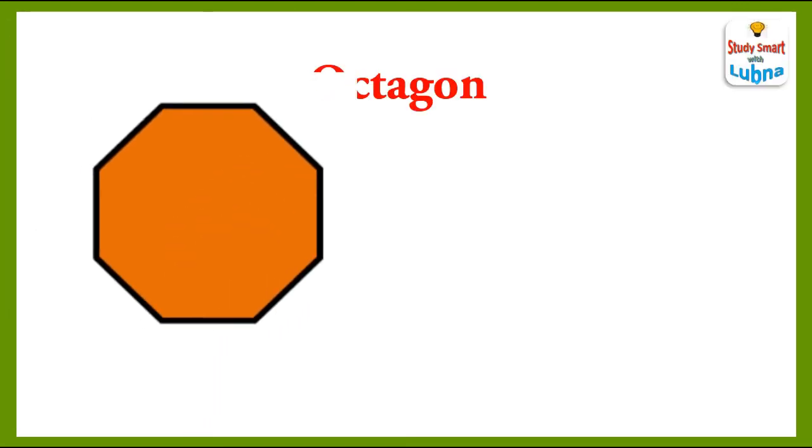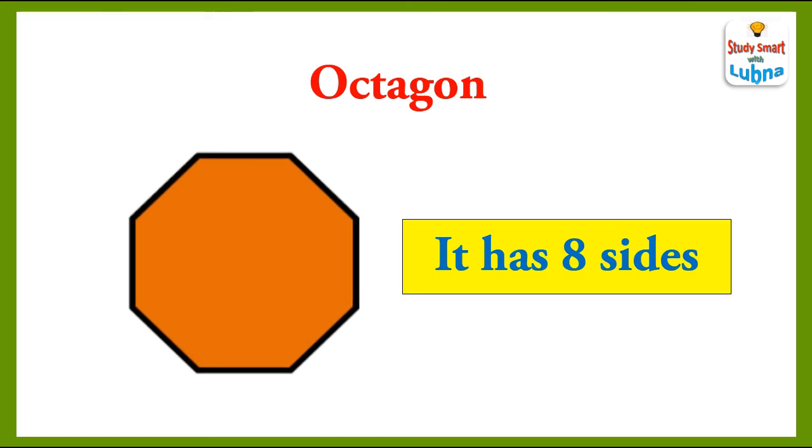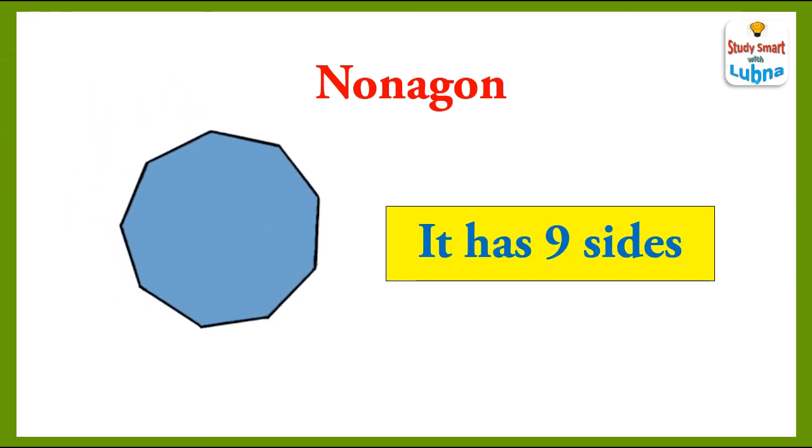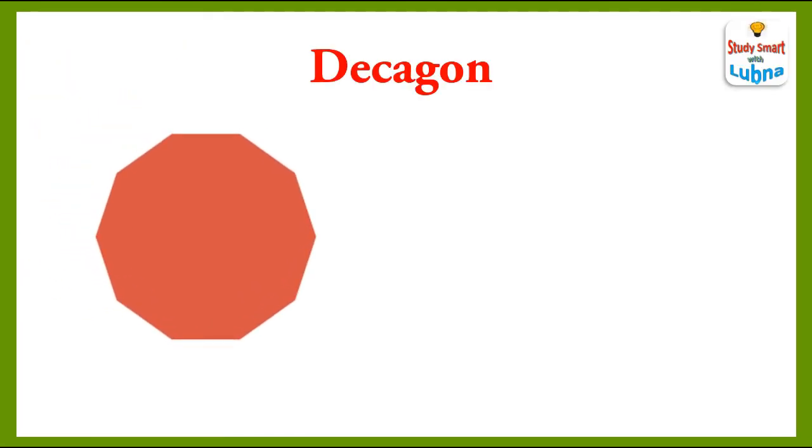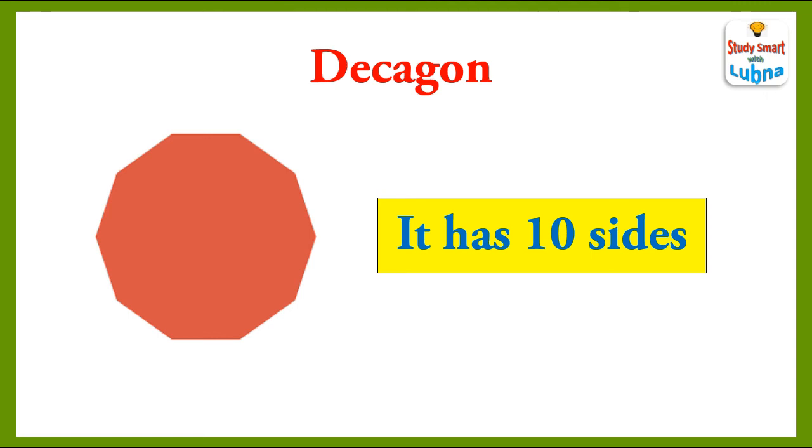Octagon. Octagon has eight sides. Nonagon. Nonagon has nine sides. And Decagon. Decagon has ten sides.